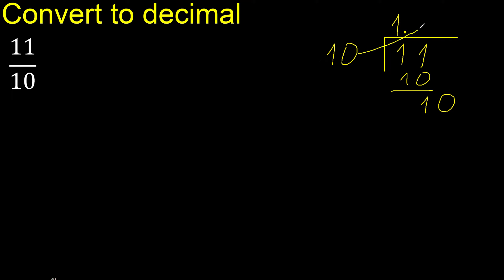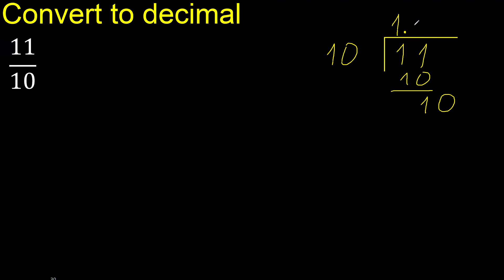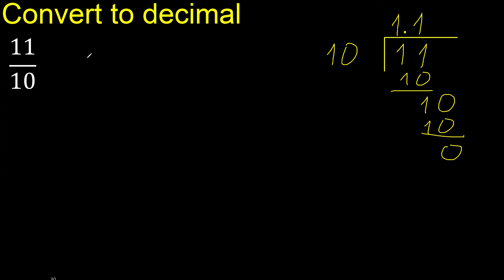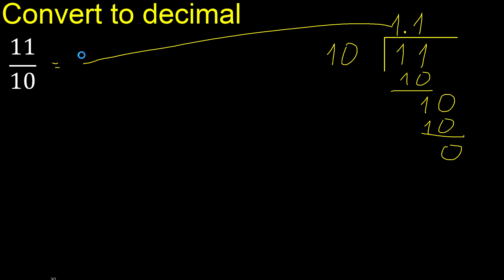10 multiplied by which number is nearest to 10 but not greater. Multiplied by 1 is 10 exactly. Subtract 0. 0, therefore finish.